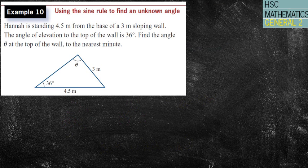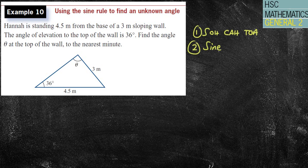The next one, probably the last one, Hannah is standing 4.5 metres from the base of a 3 metre sloping wall. The angle of elevation to the top of the wall is 36 degrees. It's drawn in. Find the angle of theta at the top of the wall to the nearest minute. Alrighty, so, this question, let's have a look. First of all, can I use Sokotoa? Okay, I keep on looking for that rule because that's quite an easy rule to use. But no, there's no right angle. Next one, can I use the sine rule?